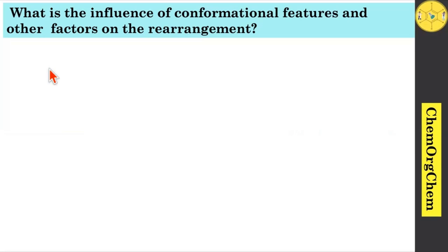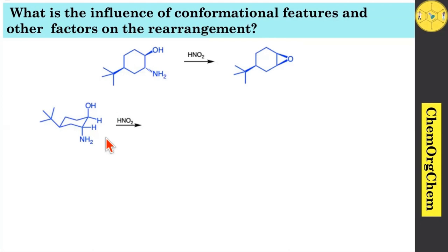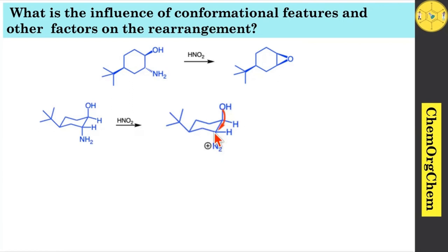Next consider an example where a bulky tert-butyl group is placed on the cyclohexane system. That bulky group makes ring-flipping very difficult. You convert this structure into the chair form — the tert-butyl group never allows ring flipping into the ring-flipped structure. Therefore when you use nitrous acid which quickly undergoes diazonium ion formation, in this particular structure there is no group exactly present in the anti-periplanar position. Therefore the hydroxy group readily attacks this center, which leads to generate the corresponding epoxide as a product.